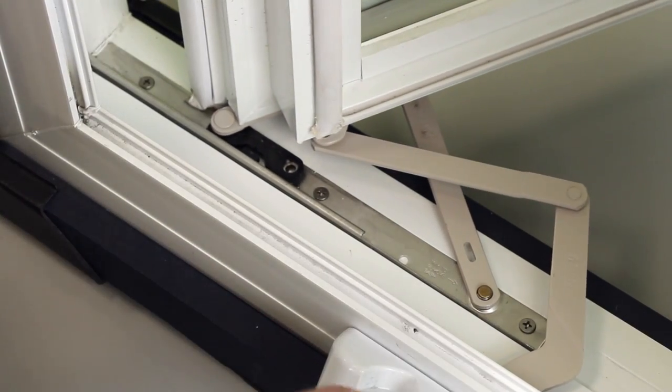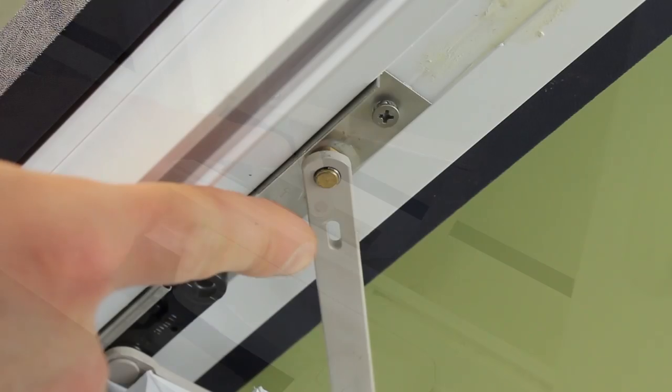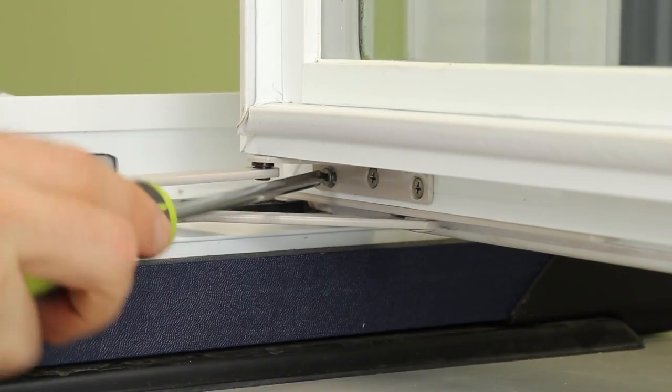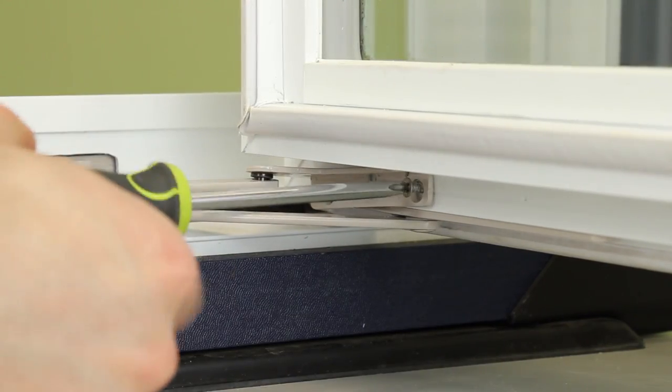To get started, unlock and open your window so you have access to both the bottom and top hinge sets. First, disconnect the operator bracket from the bottom of the window sash.